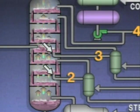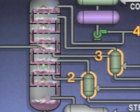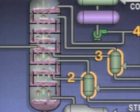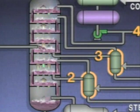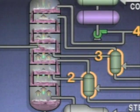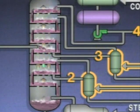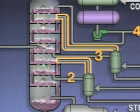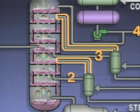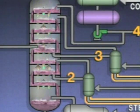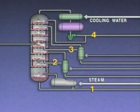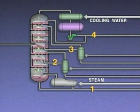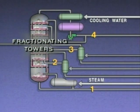The liquid drawn off by each side draw line goes to a side draw stripper. Each stripper is basically a small distillation tower. Its function is to remove or strip off any lighter products from the liquid. Liquid from the tower enters at the side of the stripper, where it is heated by steam, causing any lighter products to vaporize. The vapors produced are reintroduced into the tower above the tray from which the original liquid was drawn off. The liquid left over in the bottom of the stripper is drawn off as a product. The products or cuts obtained from distillation are sometimes called fractions, which is why distillation towers are sometimes called fractionating towers or fractionators.